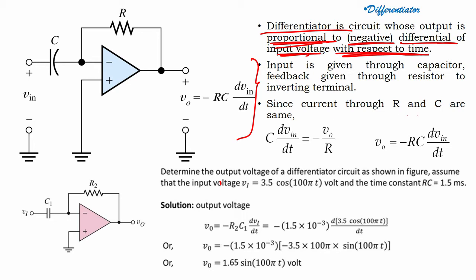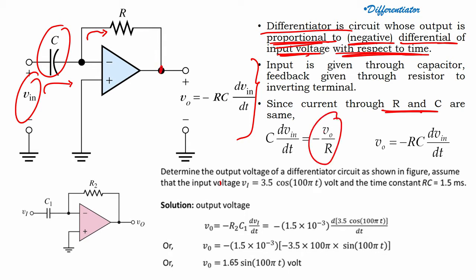Since the current through R and C are the same, I can write down this current equation. C into dVin by dt equals minus Vo by R. From here I can find the value of Vo: Vo equals minus RC dVin by dt. Very easy, extremely easy.